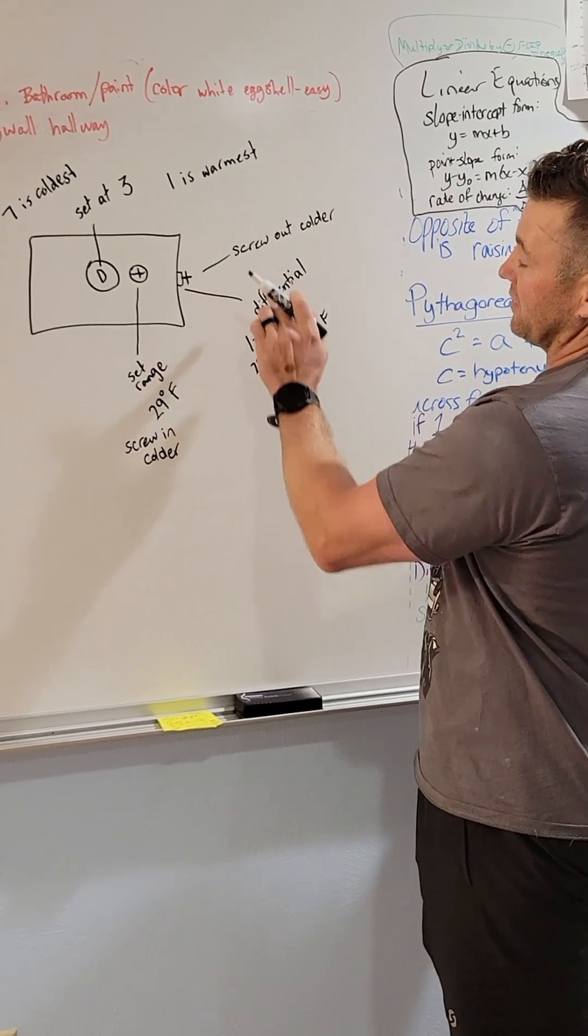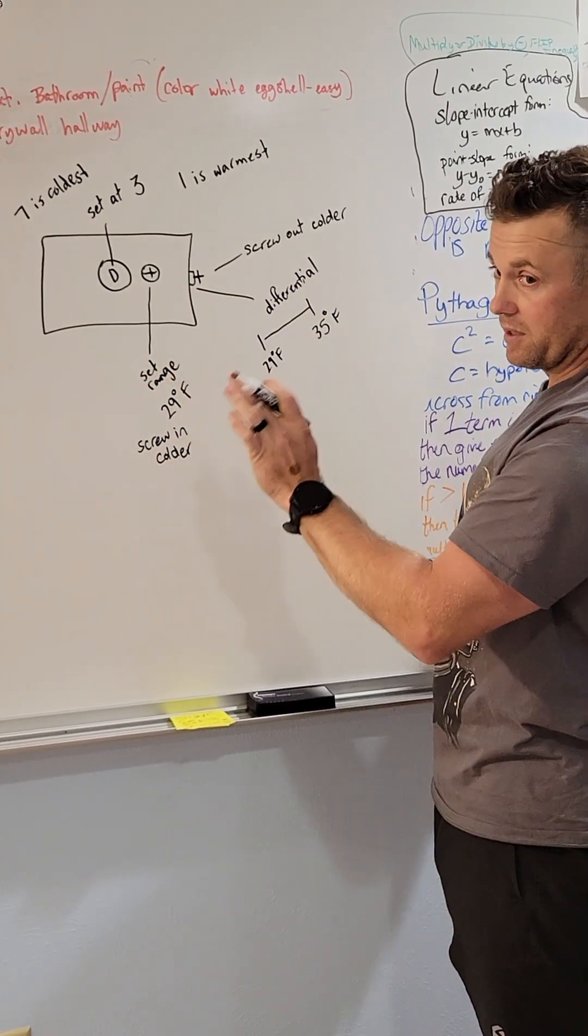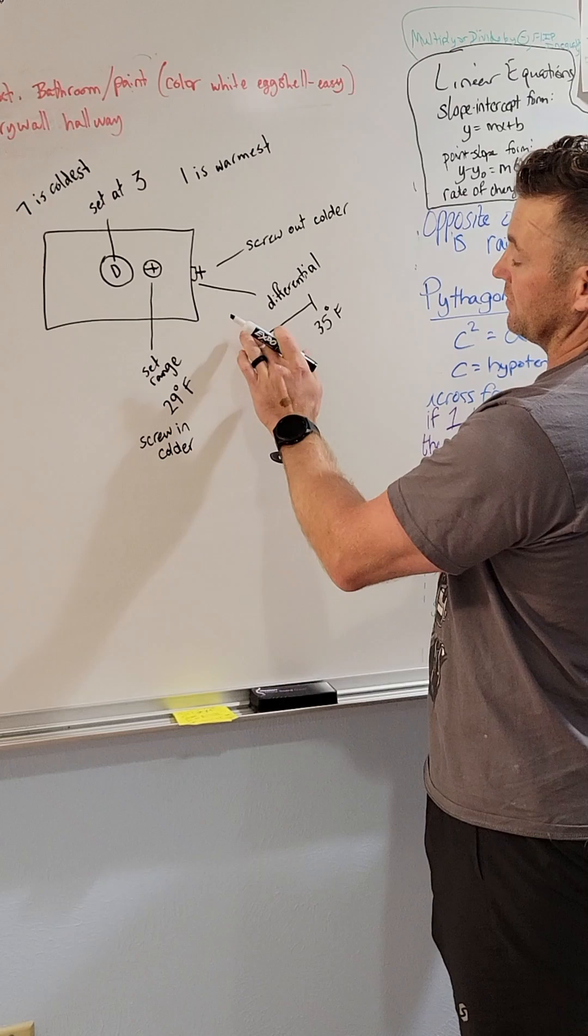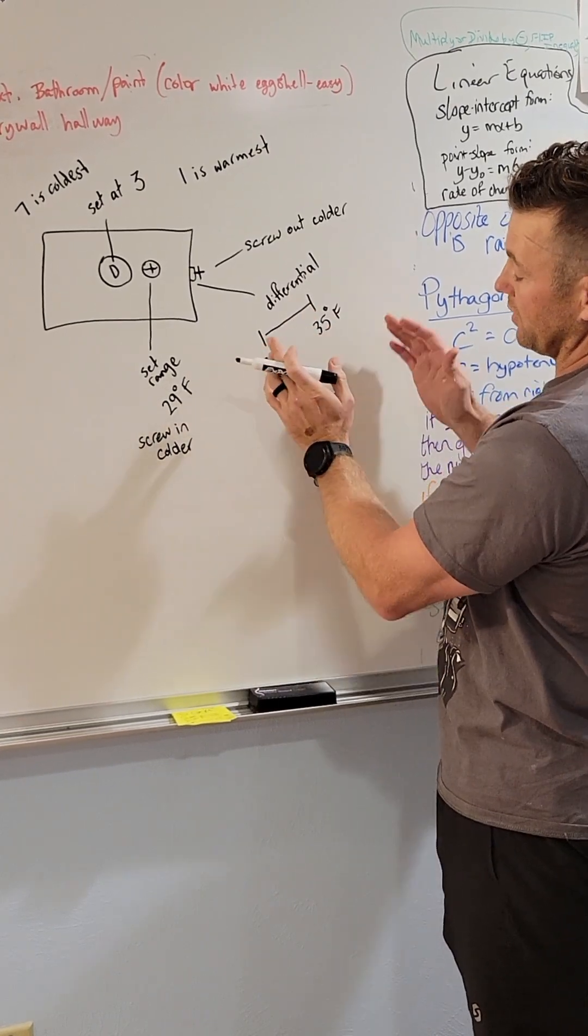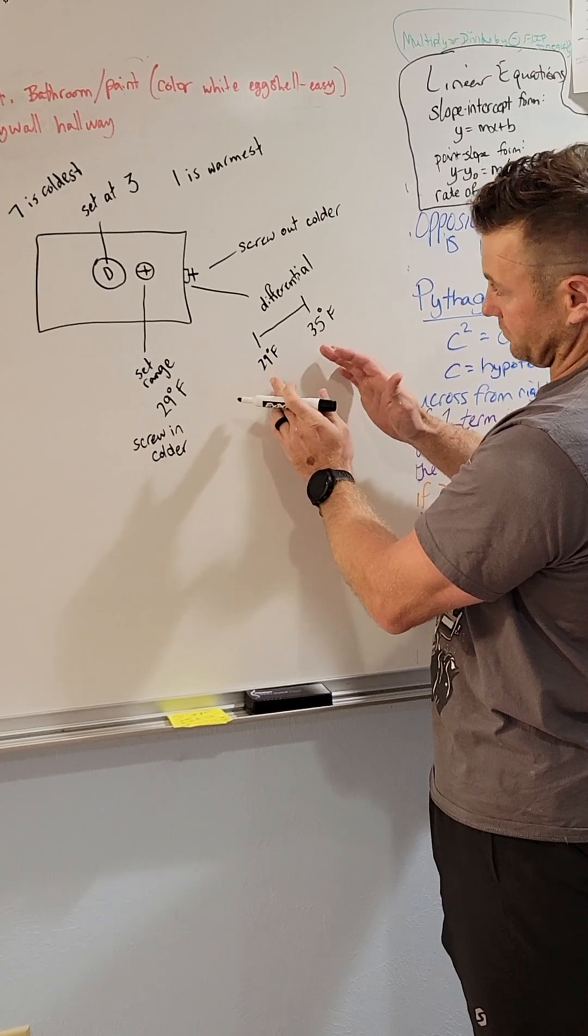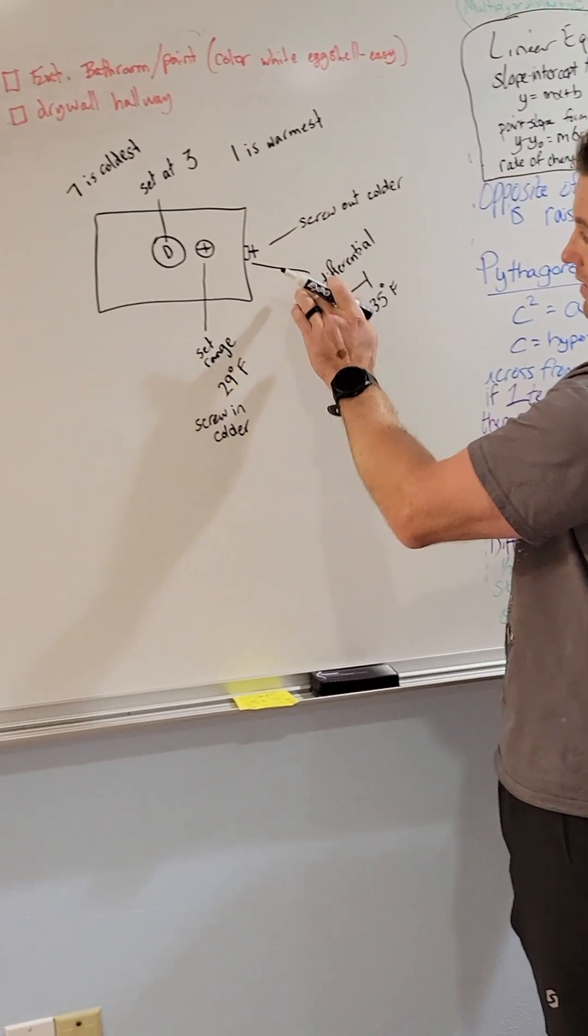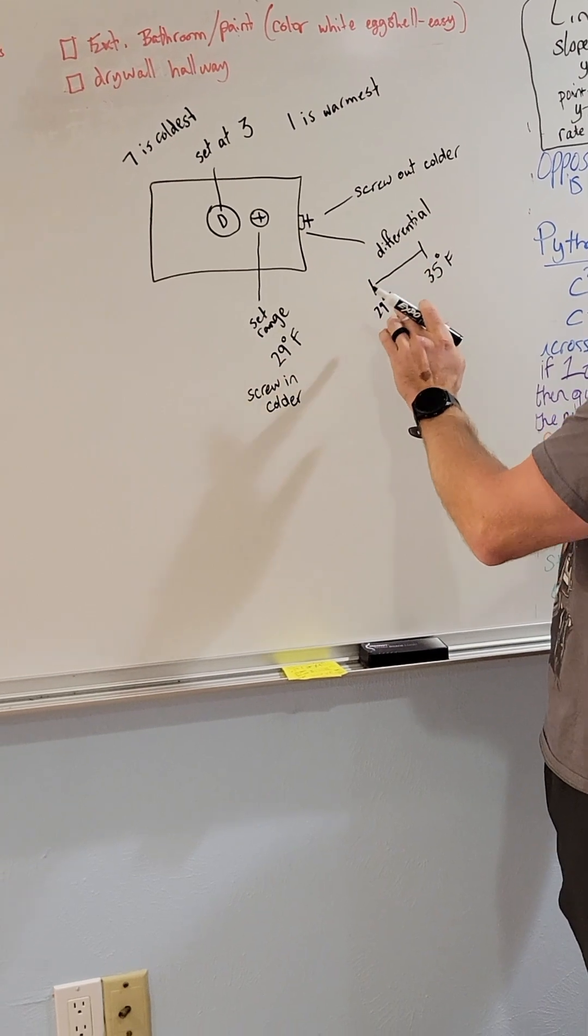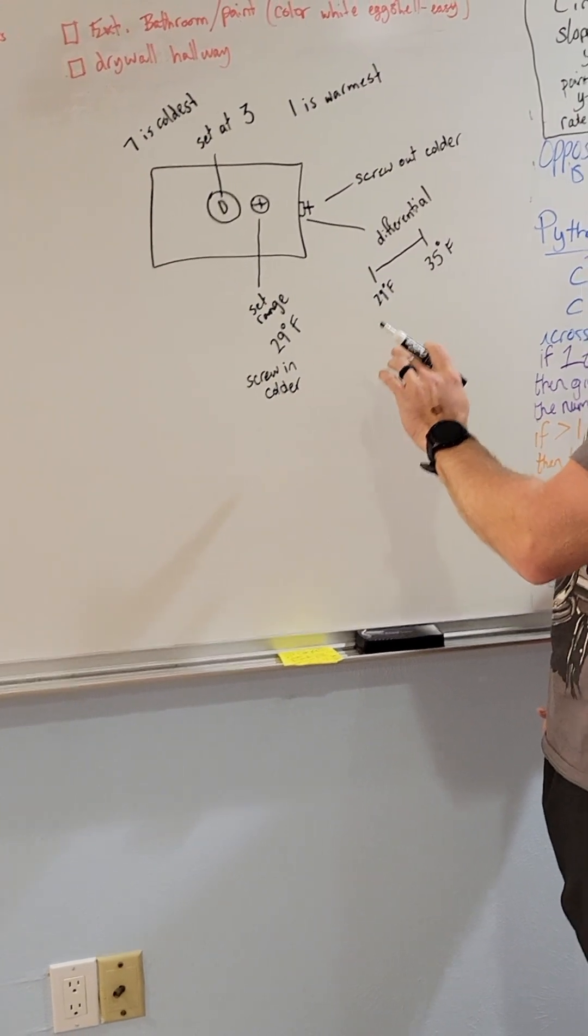So what I found out is if you screw this out on this particular thermostat, the differential will make it colder. The range will decrease, but it would also move it down some. On the set range, after I got this kind of dialed in where I wanted it, it was sitting about 34 to 38.